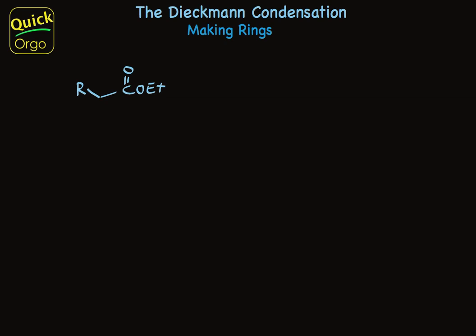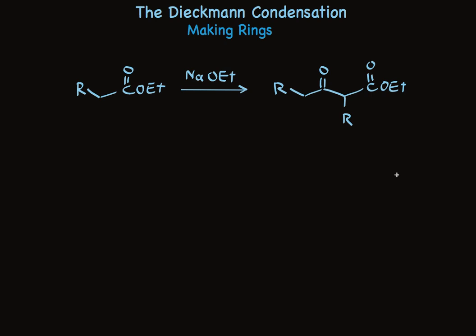In the Claisen condensation, you start with a simple ester, treat it with base, and you get a somewhat complicated product out of it. This beta-keto ester has the same substituent attached to the two and four carbons. The reaction occurs because the enolate of one molecule of ester acts as a nucleophile to add to the carbonyl of another molecule of ester.